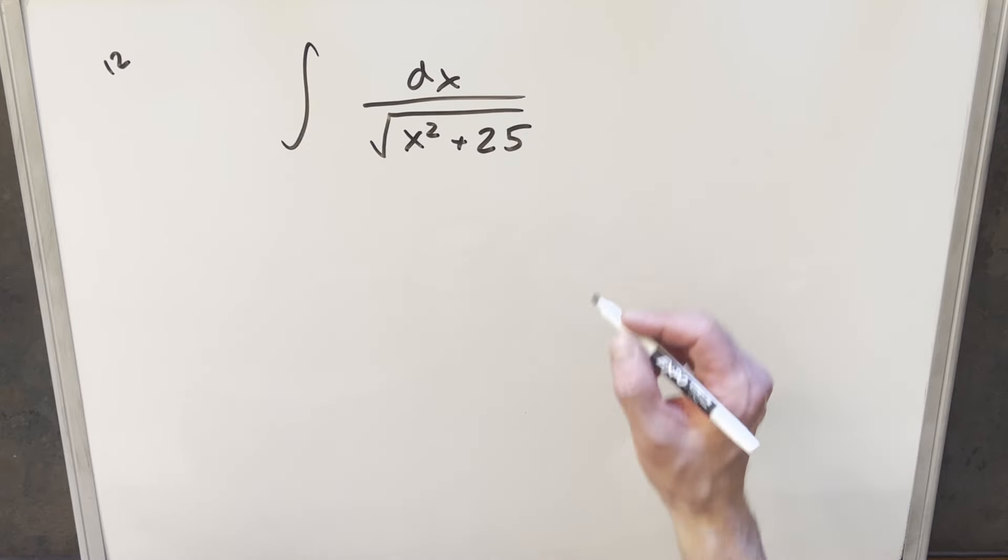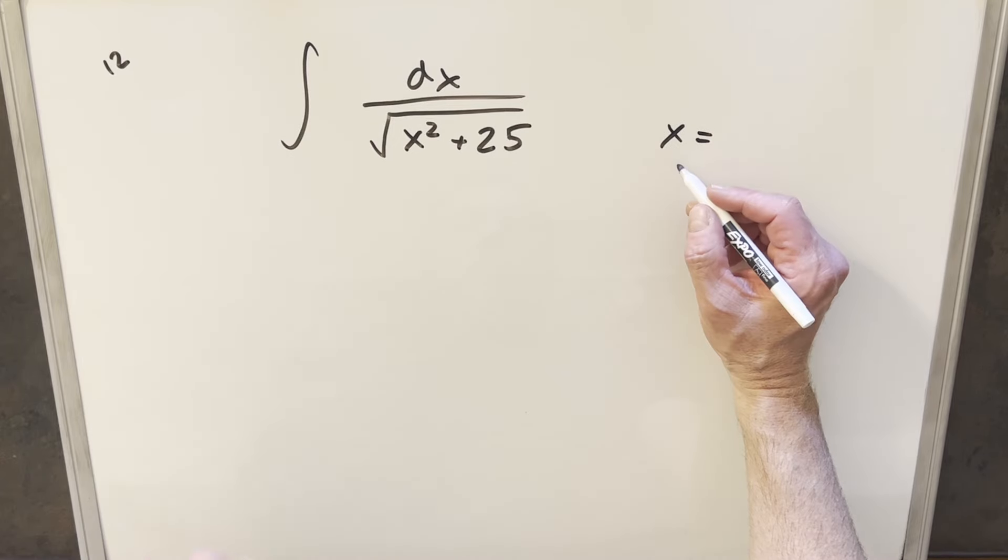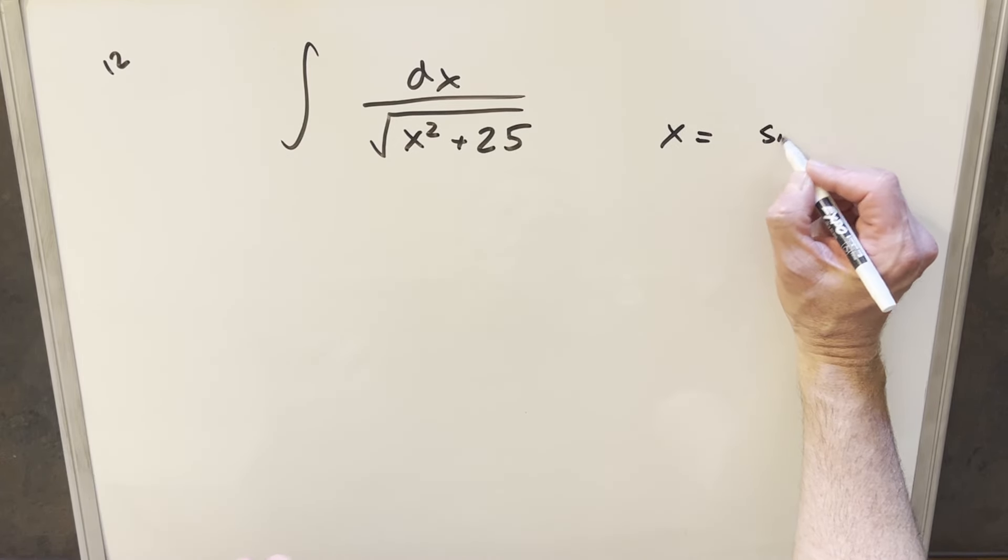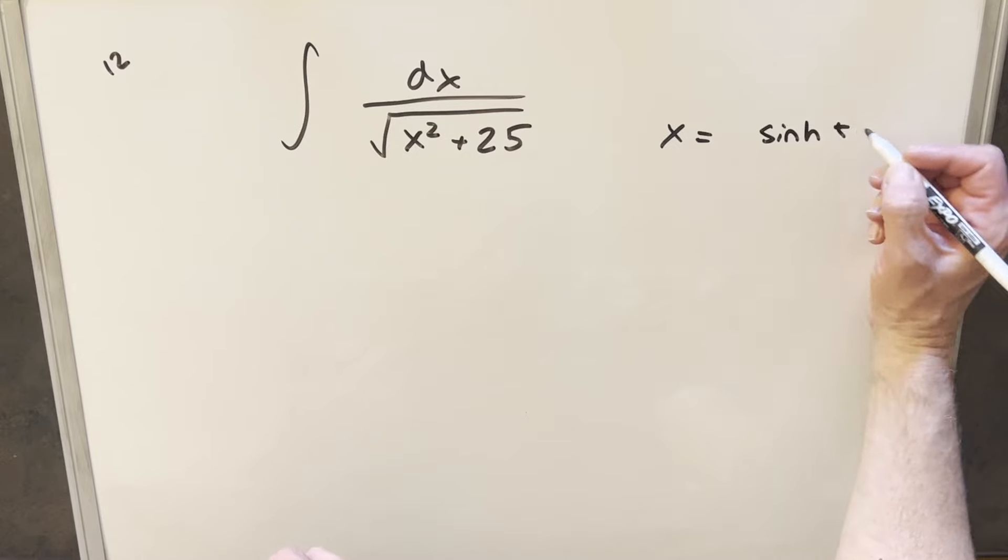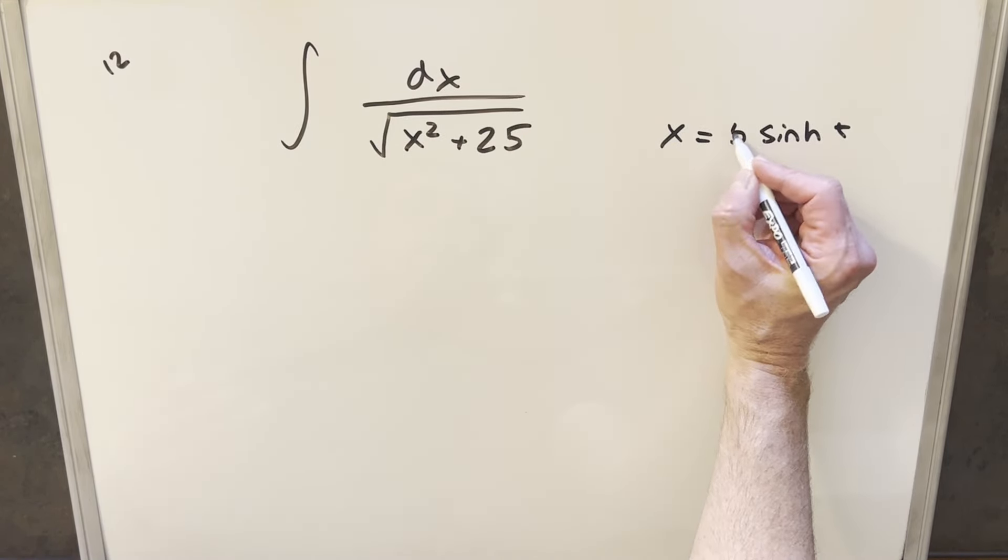What I want to do here is we want something that's going to work nice. And it happens that if I do my substitution for x, we do it for sinh of t. Well, I want to handle this 25, which is 5 squared, so what I can do is put a 5 in front of this.